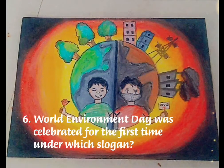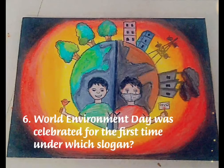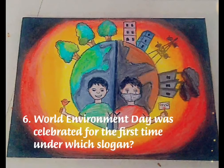Our sixth question is: World Environment Day was celebrated for the first time under which slogan? Your time starts now. The answer is 'Only One Earth.' World Environment Day was celebrated for the first time in 1974 under the slogan 'Only One Earth.'